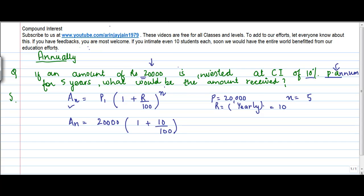To the power n, where n is the number of years for which it is invested. So n equals 5 years — this investment is done for 5 years — so it's to the power 5.